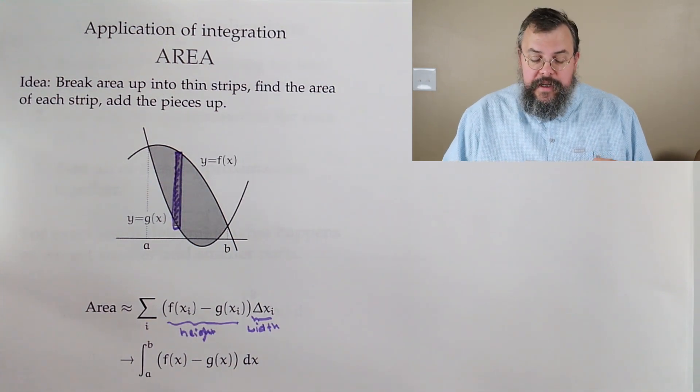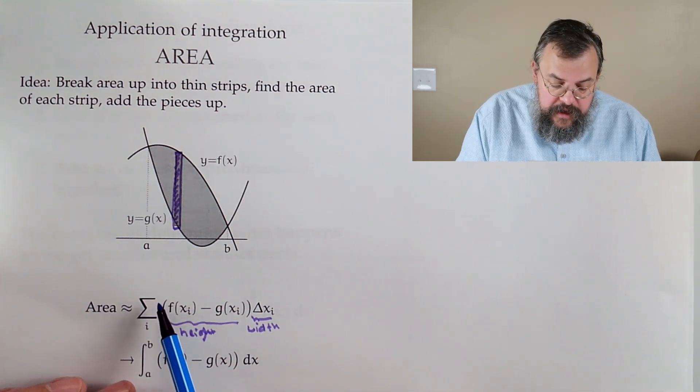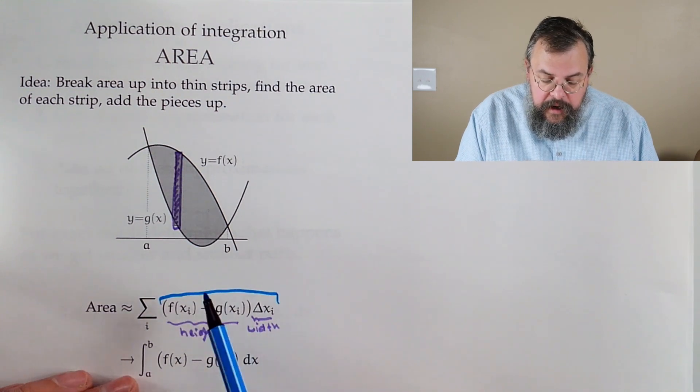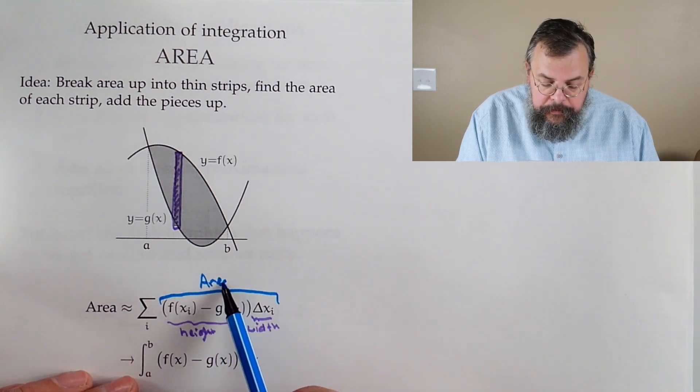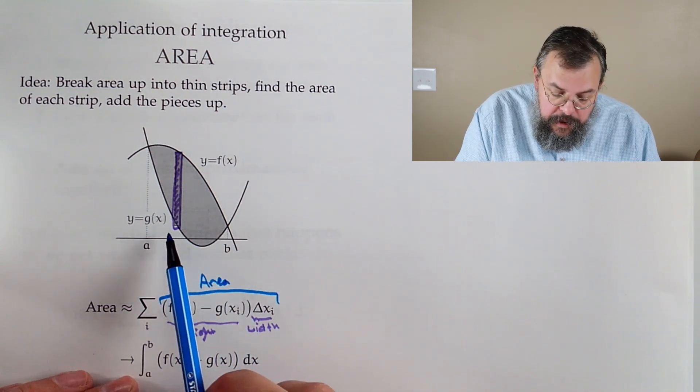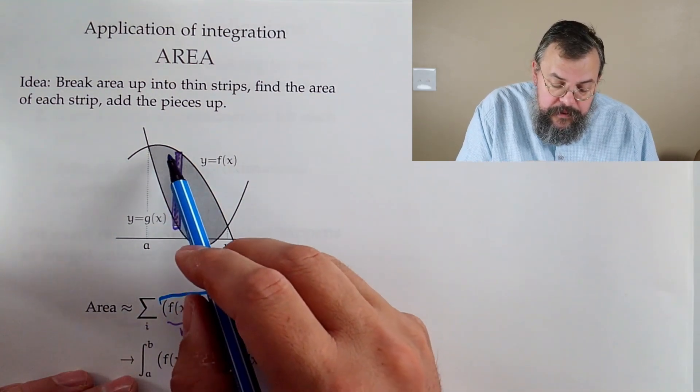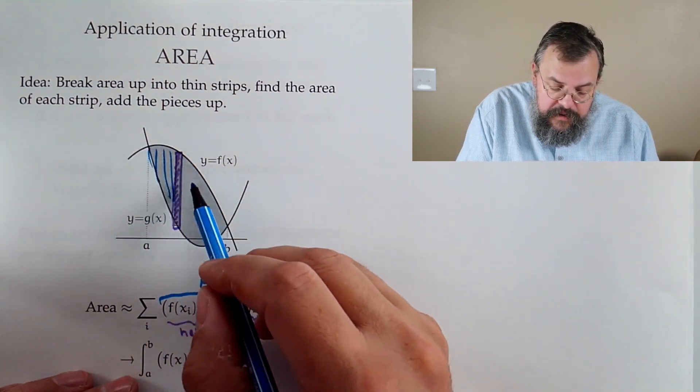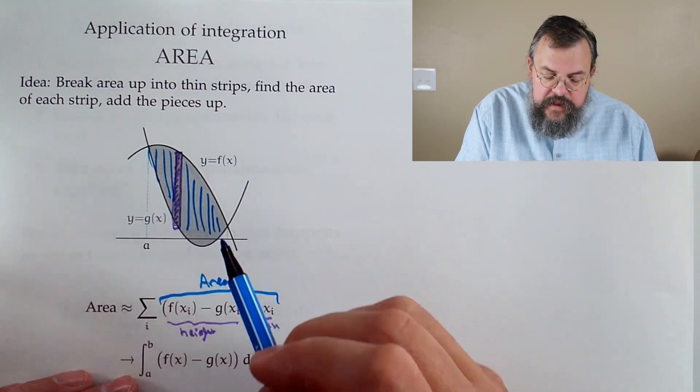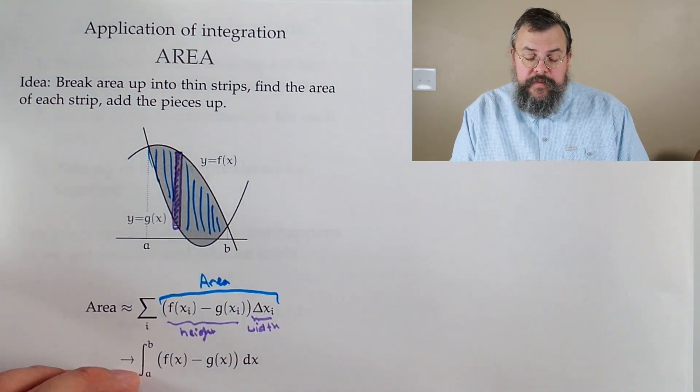Aha! So what we're really doing here is we're really saying, look, let's add up a little piece of area. Now, of course, the one little piece is not the whole thing. So we have to, of course, split into lots of little pieces. So there's all these little parts, each one we're adding up.